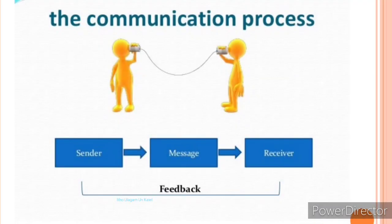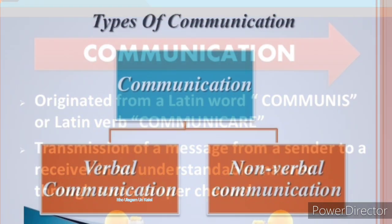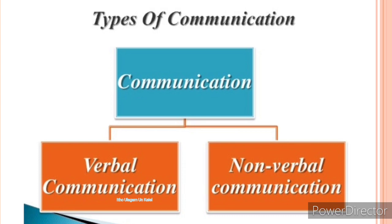This is the model of the process of communication. In communication, at least we need two persons — one is the sender and another one is the receiver. The sender sends the message to the receiver, and after receiving the message, the receiver gives feedback. This is the normal way the communication process occurs in our day-to-day life.